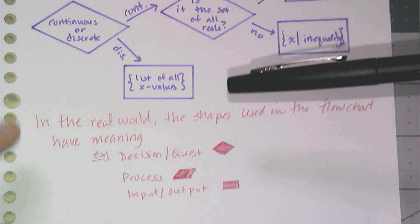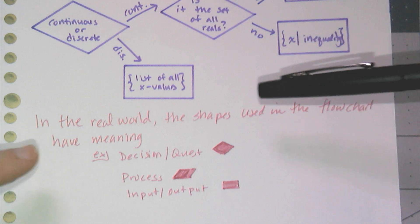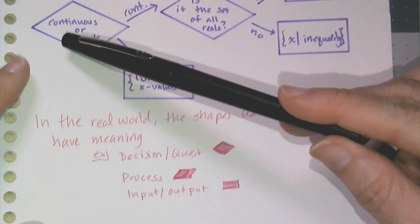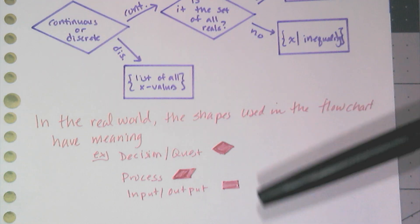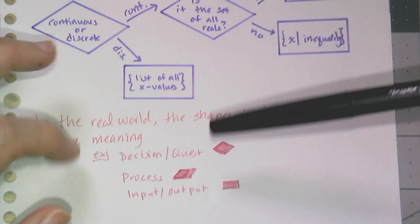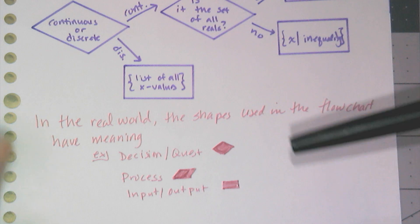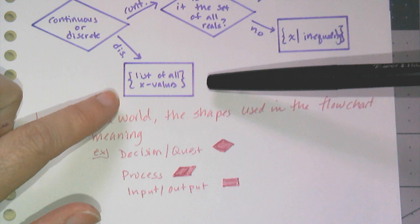Now in actual use, the shapes used in the flowchart have different meanings. So a decision or a question you have to ask is going to be this kind of shape here. They're going to call it a diamond. Just be aware. And parallelograms are going to be process. I don't have a process step in this. And then a rectangle is going to be like either input or output. In this case, it's output, right?